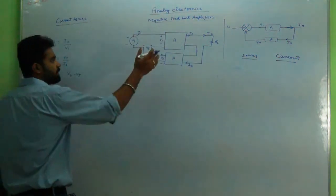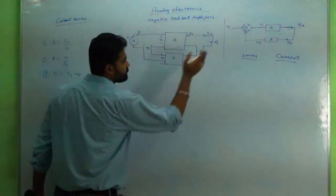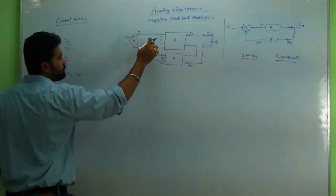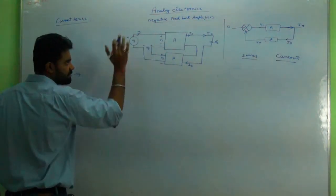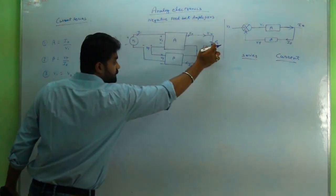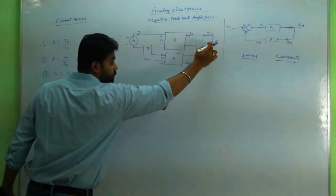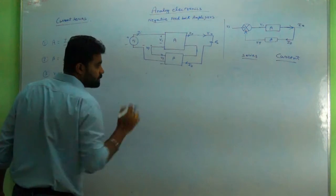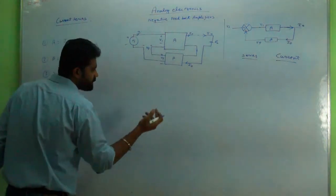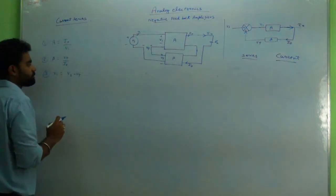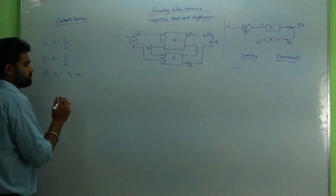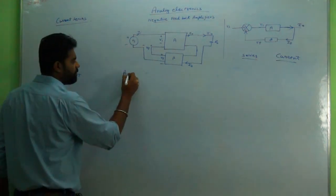The diagram shows that voltages are added or subtracted in series at the input, and whatever current is available at the output, it is sampled and fed back to the input for further addition or subtraction. So we will start with the basic amplifier AF — what is the amplification in terms of A and beta.